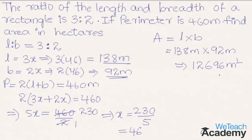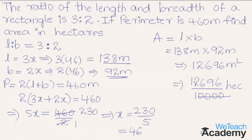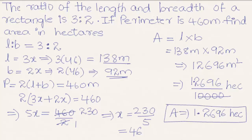Now let us find the area in hectares by dividing 12,696 by 10,000. Cancelling four zeros in the denominator and placing the decimal point four digits from the right, we get an area of 1.2696 hectares. We hope you understood the concept — do like and subscribe to VTeach Academy. Thanks for watching, have a nice day!